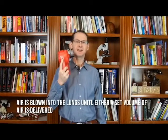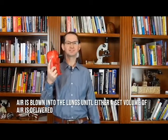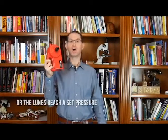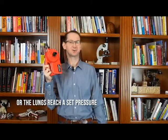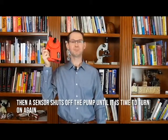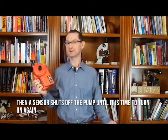So to understand how a ventilator works, think of it as an air pump. This pump can generate air flow and it has a switch to turn it on. The air switch is controlled by a timer that turns on the pump a set number of times a minute. Once the pump is on, air is blown into the lungs until either a set volume of air is delivered or the lungs reach a set pressure. Then a sensor shuts off the pump until it is time to turn it on again.